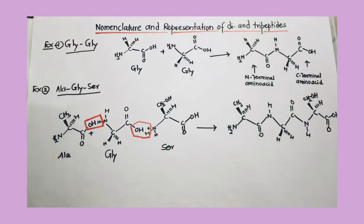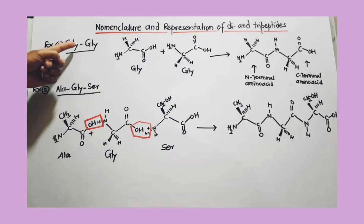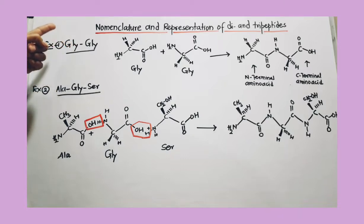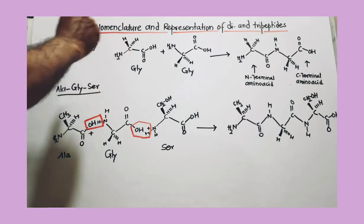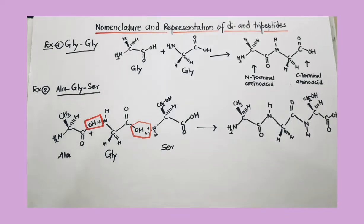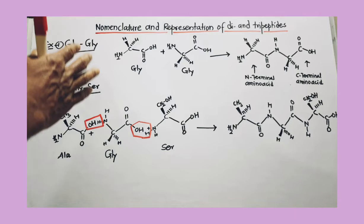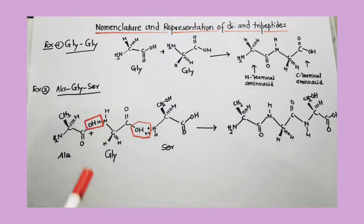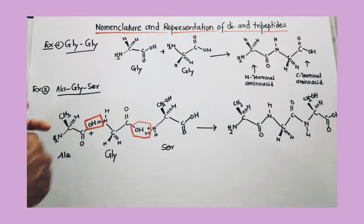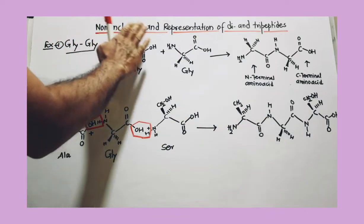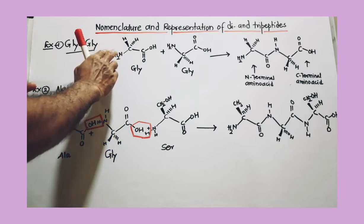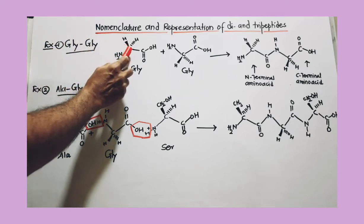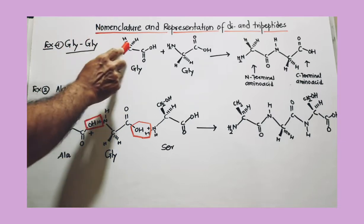GLY-GLY means what? If you remember, GLY is the abbreviation used for glycine — and this is again glycine. So this dipeptide is formed after joining two glycine molecules. The left-hand side amino acid has a free amino group, and the right-hand side amino acid has a free COOH group. Note that the alpha-carbon in most amino acids, except glycine, is a chiral carbon.